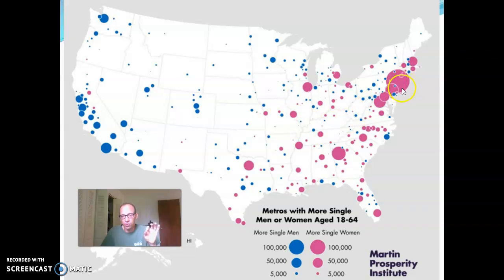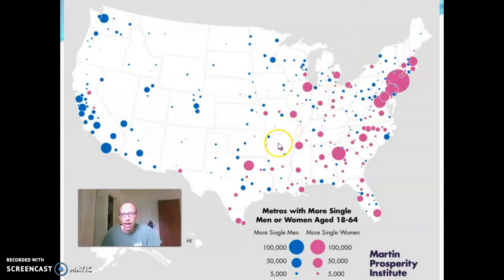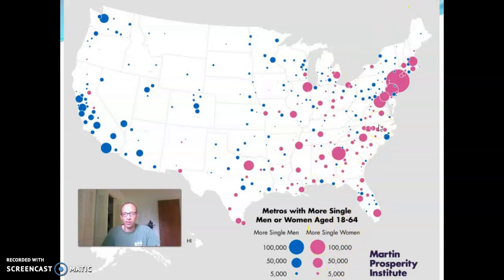I'd also start to wonder about New York — the size of New York — since this shows just the raw number of additional single women. I'd want to factor in the size of the city, which we'll do in a different exercise. But realizing that if you wanted to move somewhere after you graduate college and you were looking for a relationship with a man, maybe the west would be a better place to go; if you're looking for a woman, perhaps the east. Those are kind of the stories on the surface, and it shows again how statistics could relate to relationships.